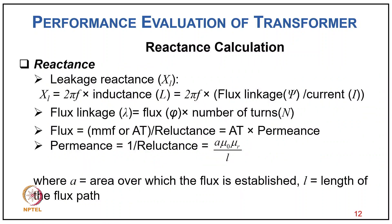The leakage reactance XL equals 2πf times inductance L, which equals 2πf times flux linkage divided by current. The flux linkage equals flux times number of turns N, and flux equals ampere-turns divided by reluctance. The reluctance is given by l divided by (μ₀μᵣA), where A is the cross-section area and l is the length of the flux path.